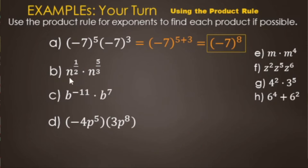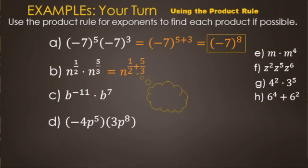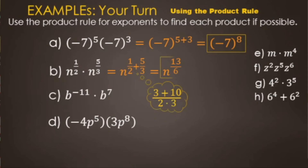Letter B: we have n to the one-half times n to the five-thirds. Same base, so we add the exponents. We have fractions with two different denominators — a two and a three. We cross-multiply: one times three gives three, and two times five gives ten. Add those for the numerator: thirteen. Multiply the denominators: two times three makes six. So the answer is n to the thirteen-sixths.